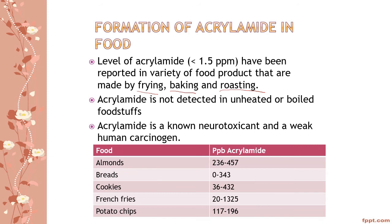For example, chicken contains amino acids including possibly asparagine. If you fry or bake the chicken, acrylamide may form. But if you eat boiled chicken, no acrylamide will be formed. So in terms of preparation, steaming or boiling is a safer option to avoid consuming acrylamide.